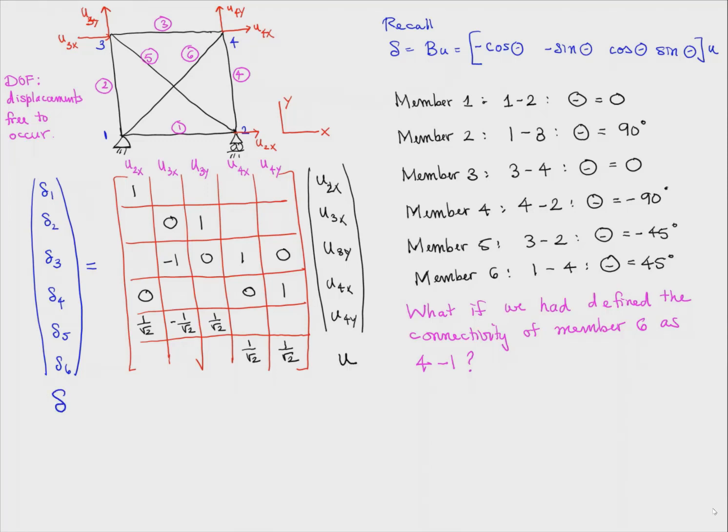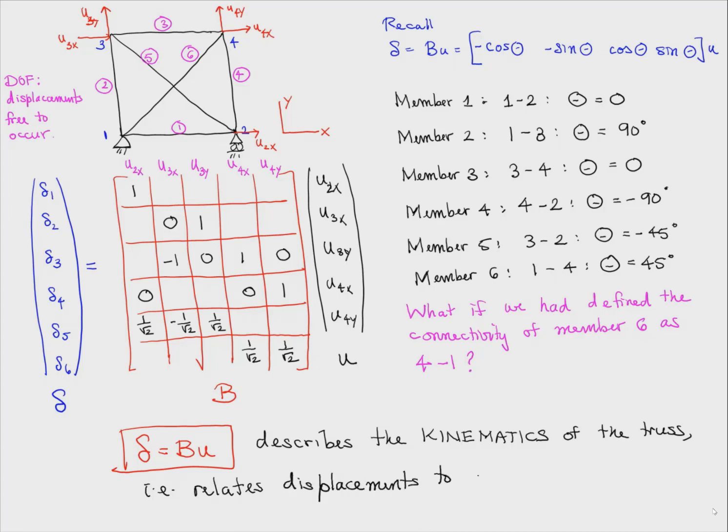Now, this big matrix that we built is called the B matrix for the whole structure. So this delta equals B times U gives us all the member changes in length given all the joint displacements. This is called the structure B matrix. Again, a very important concept which is very simple for the truss but appears in different places.